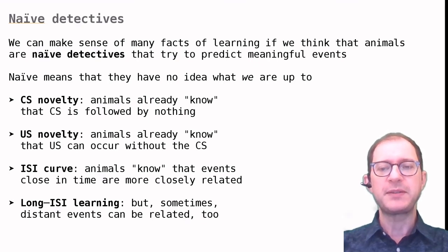We can make the same reasoning with a US that is familiar versus a US that is new. If the US is familiar, the detective knows, so to speak, that it can happen without it being announced by the sound. So if the sound now begins to predict the US, the detective has to revise its belief that the US has no relationship to the sound. And the effect is again that the detective will learn more slowly.